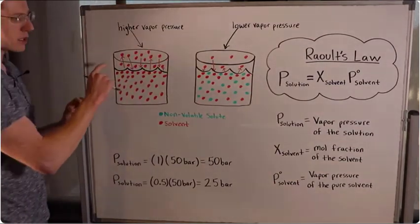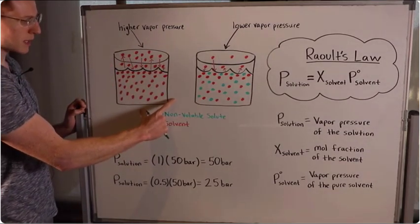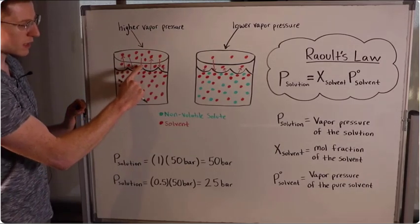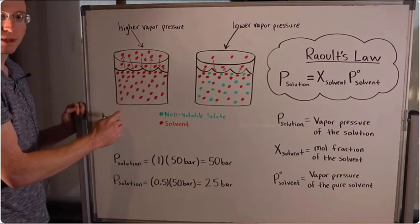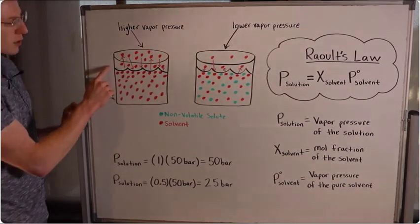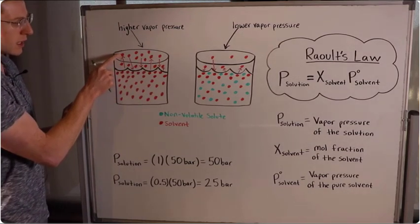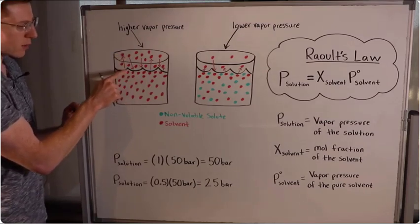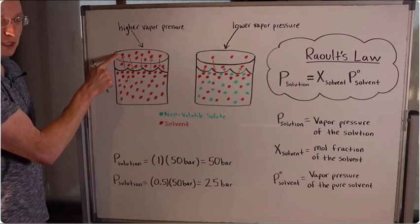Vapor pressure is a pressure that is present at the surface of a liquid. Here I've drawn a beaker full of a liquid, and the surface of the liquid is represented by this black wavy line. These red dots represent individual molecules that make up the liquid. Some of the red dots are leaving the liquid — that represents a molecule of this liquid evaporating — and now it's a vapor molecule.